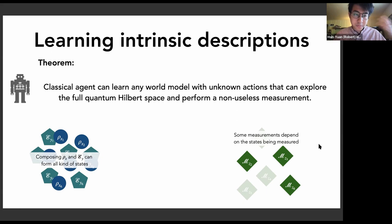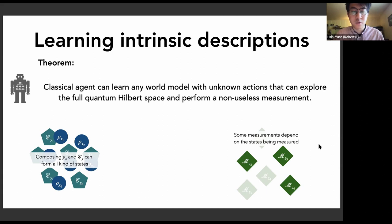In the second part of the talk, I will come back to this theorem and show how one can establish it — in particular, how a classical agent without any initial knowledge can do experiments and start understanding little parts and pieces of the physical system, then build up all of its knowledge.